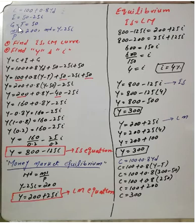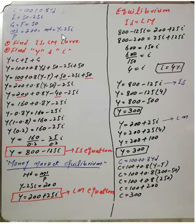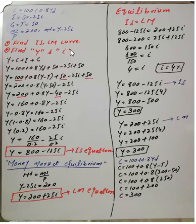G for government spending and T for tax revenue are both equal. These values are for the IS equation. For the money market, real money supply equals 200, and real money demand equals Y minus 25r. We need to find the IS and LM equations, then find equilibrium income and equilibrium interest rate.